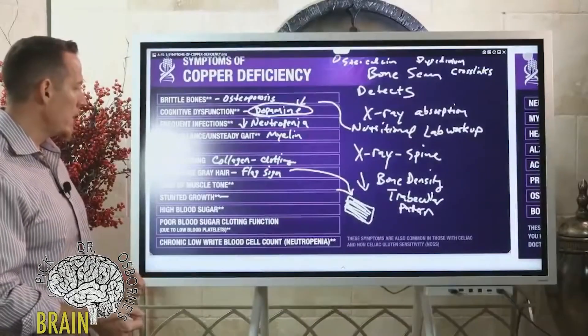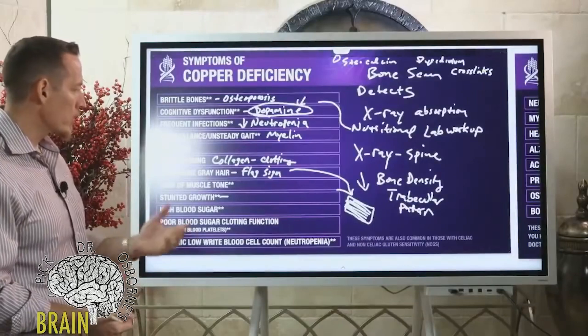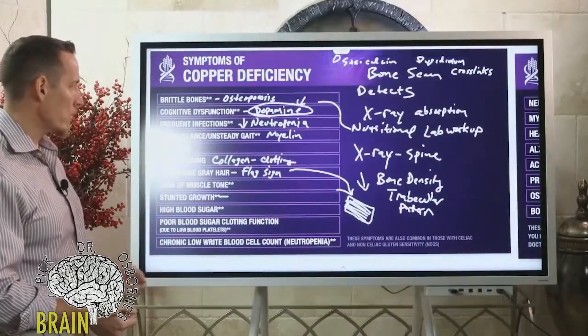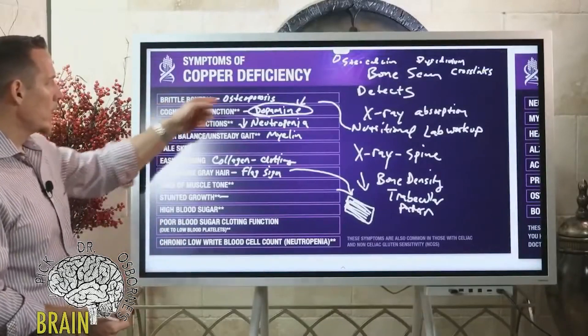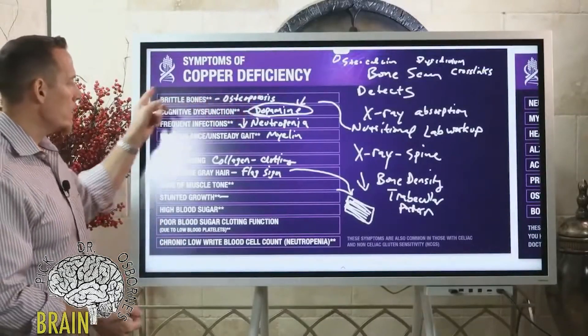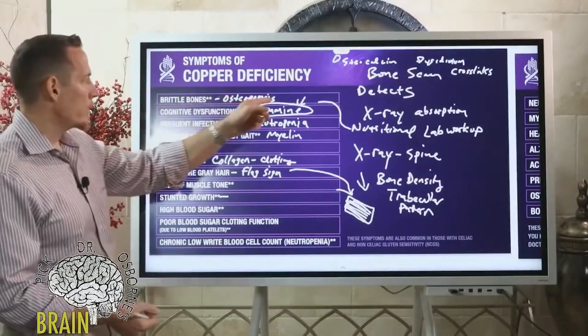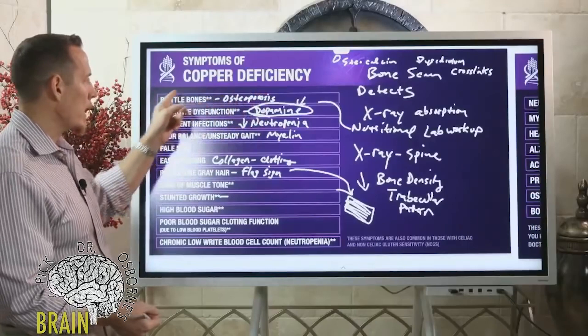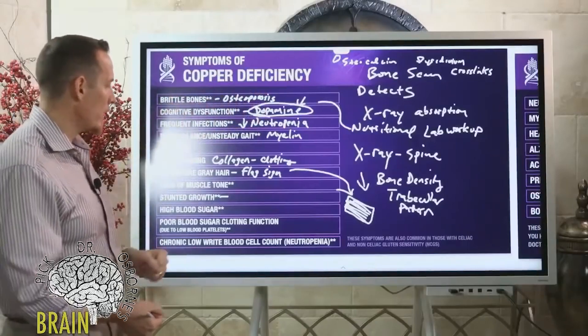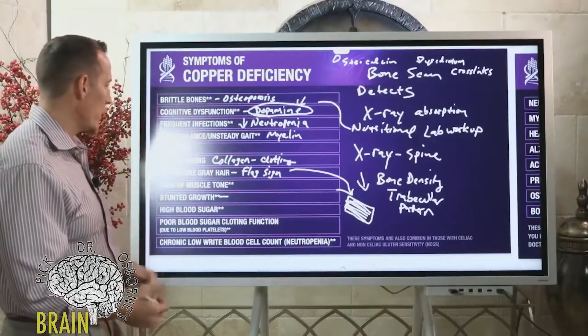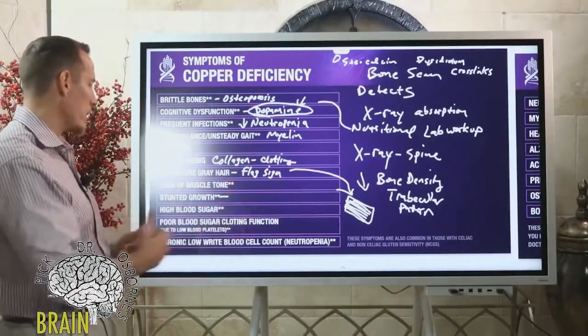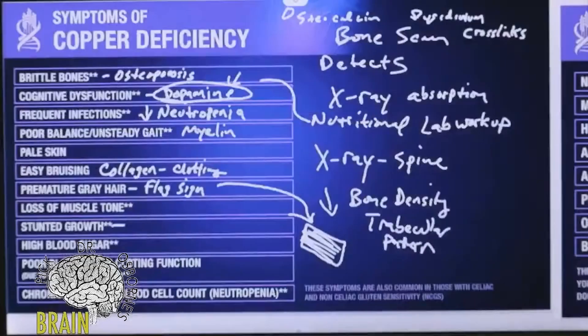In children, we see stunted growth. Copper plays a role in neurological function and skeletal formation. If children don't have adequate copper, they may not have enough to mineralize their bone and produce adequate levels of growth.